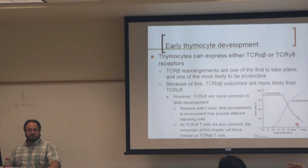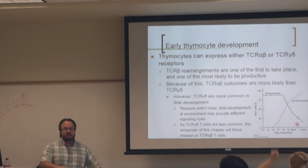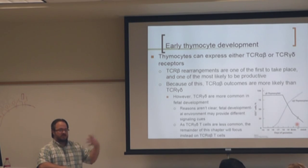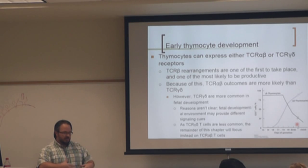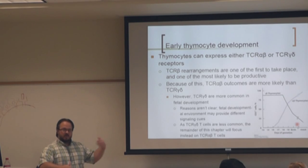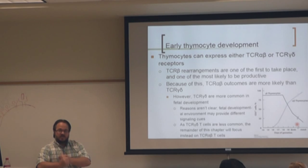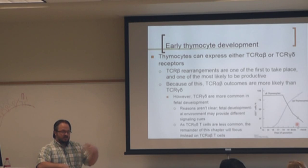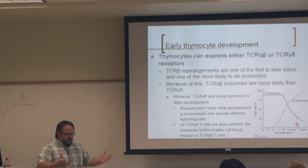The surrogate alpha is an invariant alpha — it doesn't have any variety. Whereas the real alpha, like the light chain in a B cell, will recombine via VJ recombination, not VDJ. So our alpha will have VJ recombinations occurring, and you'll get various different alphas with different sequences. The cells start to proliferate at the double negative 3 stage once they have a successful beta or gamma delta.